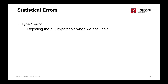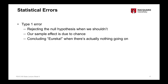A type 1 error is rejecting the null hypothesis when we actually shouldn't — concluding that we have evidence to support the alternate hypothesis when actually an effect doesn't exist in the population and the null hypothesis is true. The effect we see in our sample is just due to chance, due to sampling variability. You can think of that as saying 'Eureka' — claiming there is an effect when actually there isn't.